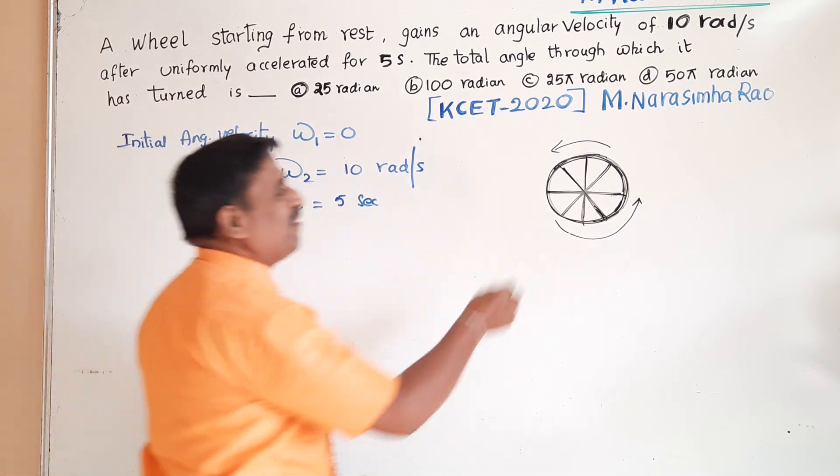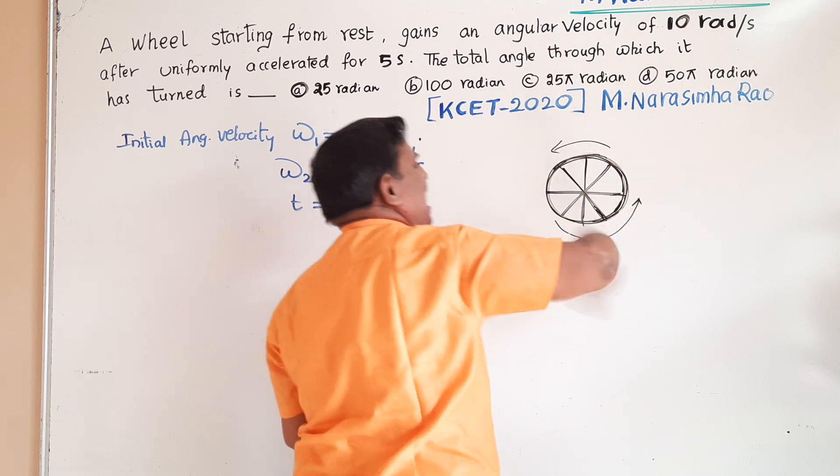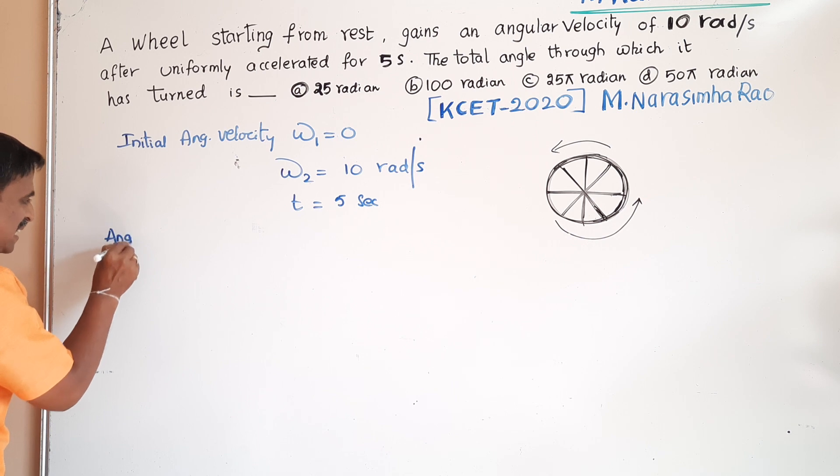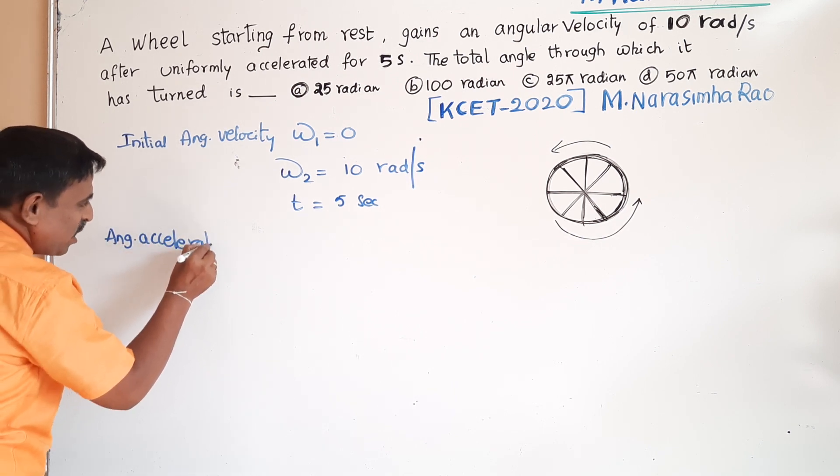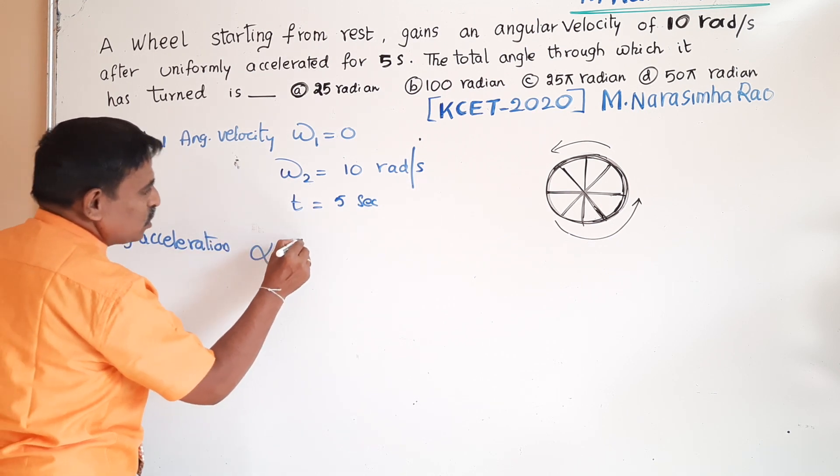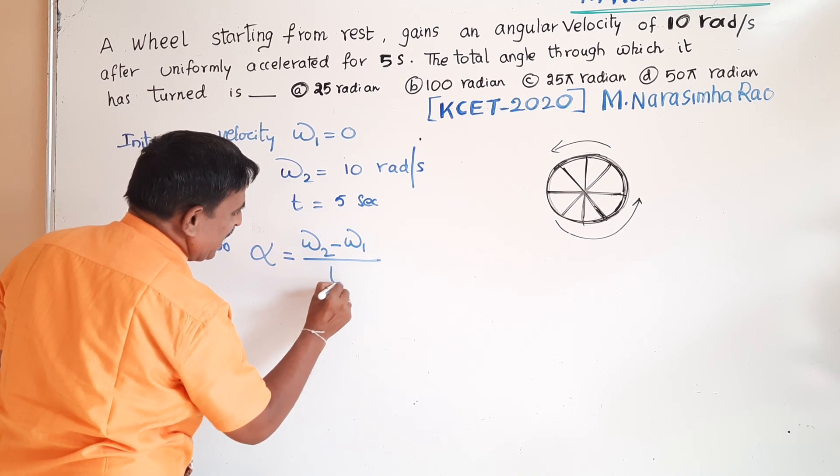Here the wheel is rotating in a circular path, it is having angular acceleration. Angular acceleration of the wheel is equal to alpha equals omega 2 minus omega 1 by t.